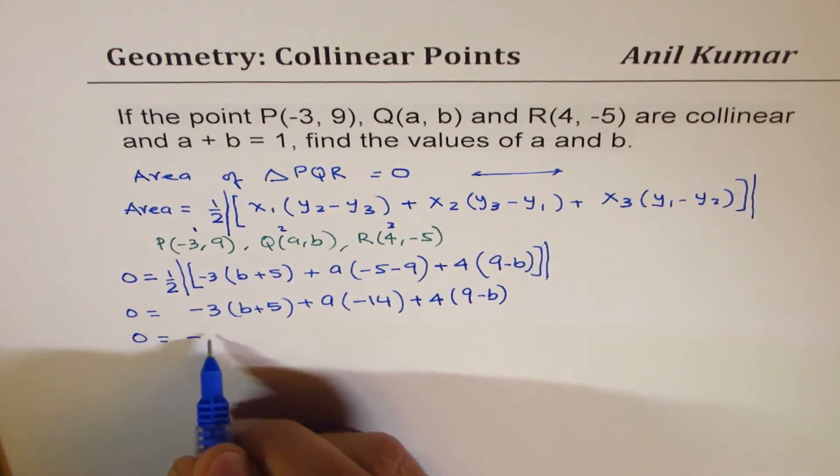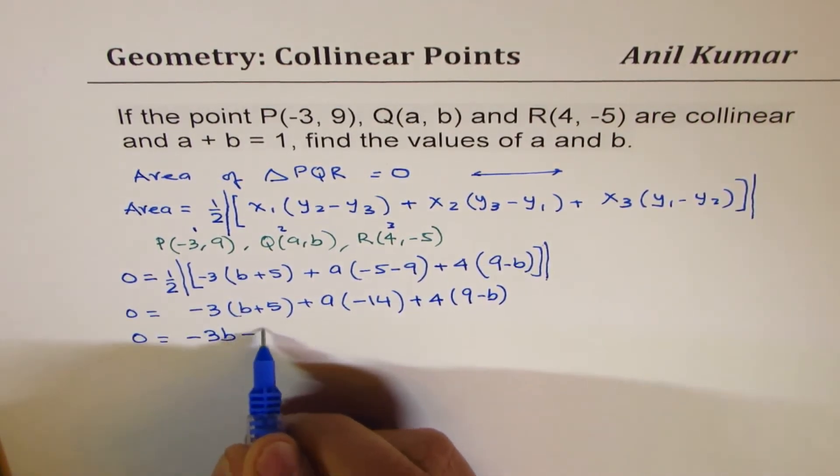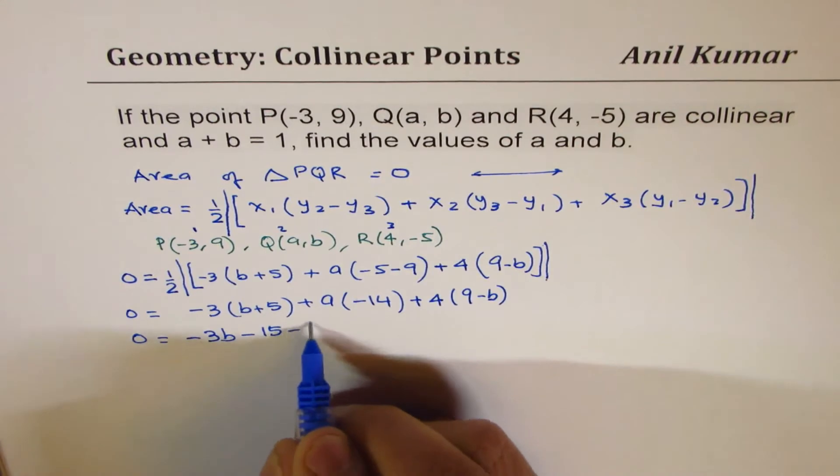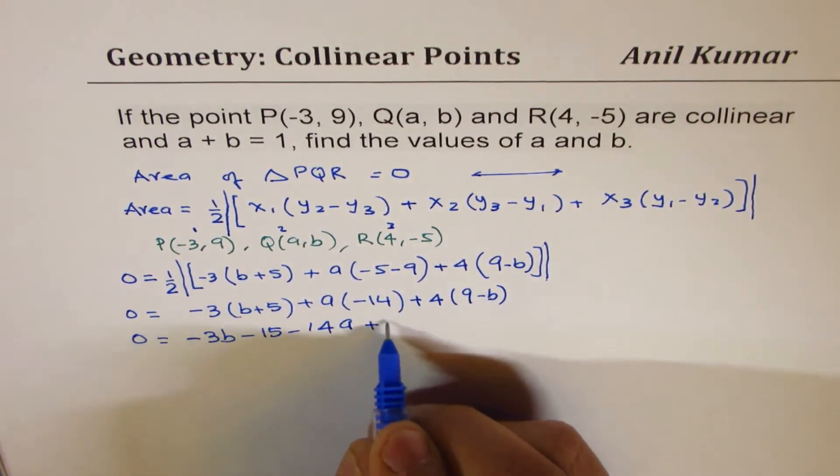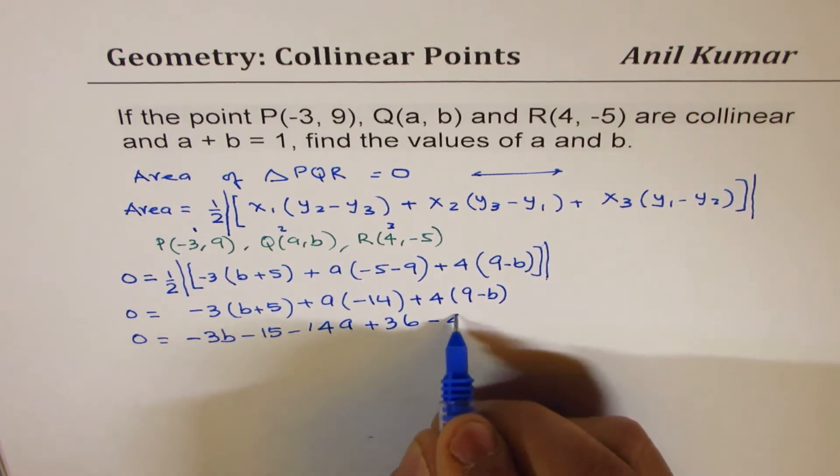Let's open this bracket. So we have -3B minus 15, minus 14A, 4 times 9 is 36, minus 4B.